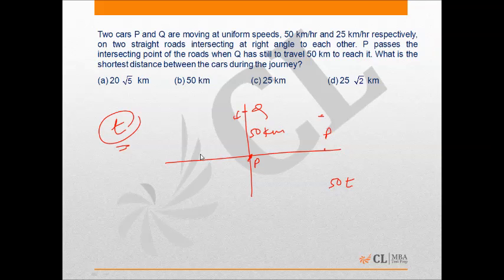So the distance traveled by P in t hours will be 50t, so P will be somewhere here. And the distance traveled by Q will be 25t, so from point P, if Q is on this side, the situation will be like this.